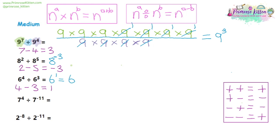Looking back at our rules for adding and subtracting, the next one has seven to the four divided by seven to the minus 11. So our sum is going to be four minus minus 11, which — looking at our table — we can see is actually four plus 11. Four plus 11 gives us 15, so the answer here is seven to the power of 15.